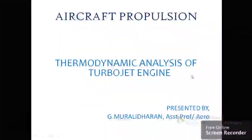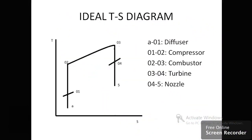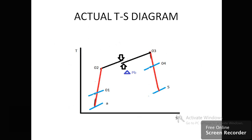Hello everyone. In this lecture video we will discuss the thermodynamic analysis of a turbojet engine. From the previous lecture videos we already discussed the ideal T-S diagram of the turbojet engine without the afterburner configuration. In the ideal process, the diffuser and compressor undergo isentropic compression, the burner has a constant pressure heat supply process, and the turbine and nozzle undergo isentropic expansion. The next slide shows the actual T-S diagram of a turbojet engine.